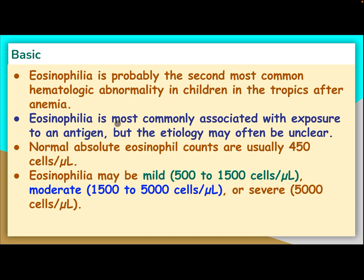Eosinophilia is most commonly associated with exposure to an antigen, but the etiology may often be unclear. Normal absolute eosinophil count is usually 450 cells. Eosinophilia may be mild if it is more than 500 cells, moderate if more than 1500, or severe if more than 5000.